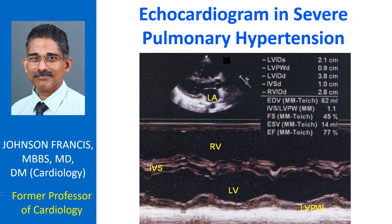Additional M-mode parameters shown include: EDV — end-diastolic volume; FS — fractional shortening; ESV — end-systolic volume; EF — ejection fraction; and IVS/LVPW — the septal to posterior wall ratio.